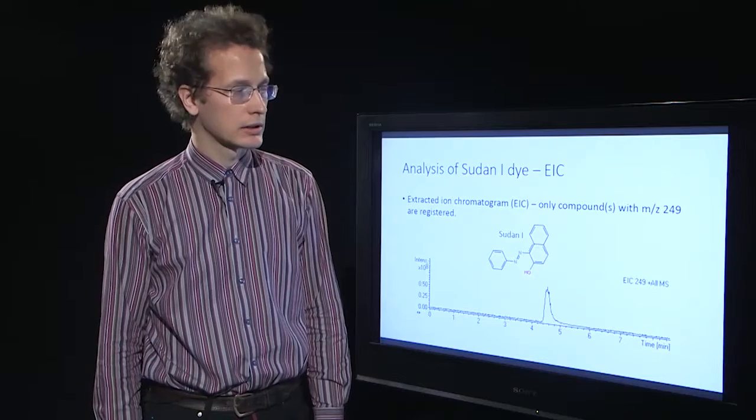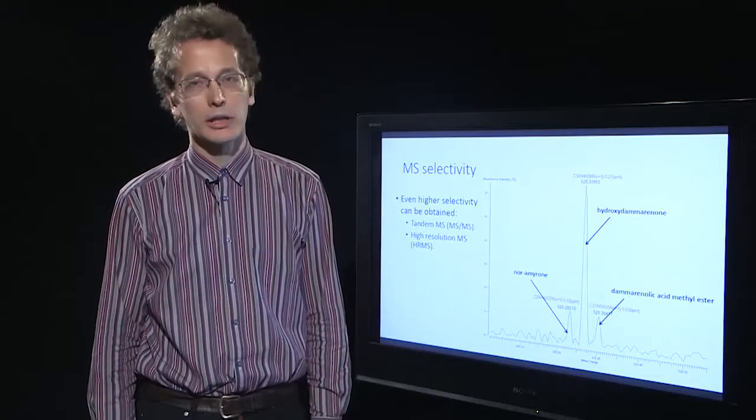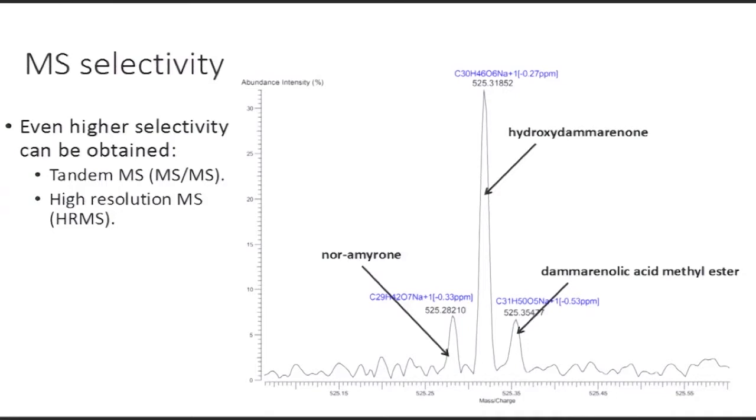Even higher selectivity can be achieved if advanced techniques of mass spectrometry are used, for example, tandem mass spectrometry or high resolution mass spectrometry. Using high resolution mass spectrometer, we can separate peaks which would compose one single peak in common low resolution mass spectrometer.